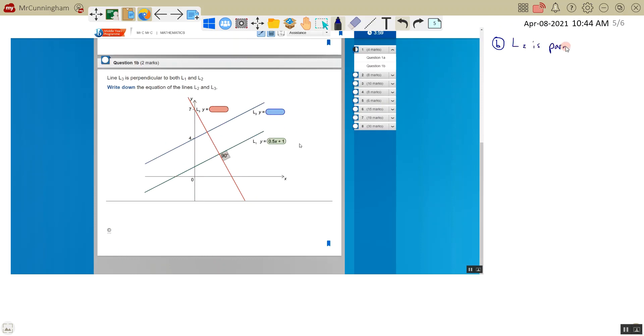If it's parallel, that means they have the same gradient. So the line L2 is going to be y equals, it's got the same gradient as L1 because they're parallel, and the c value which is the y-intercept is 4. So L2 equals y equals 0.5x plus 4.